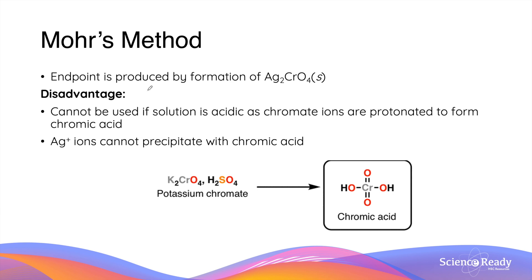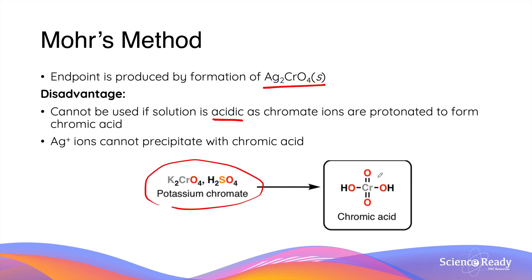Mohr's method relies on the formation of silver chromate precipitates as a marker of the endpoint. Therefore, a disadvantage of this method is that it cannot be used if the solution containing the chloride ions is acidic. This is because in acidic environments, chromate ions are protonated to produce chromic acid, which can no longer precipitate with silver ions.